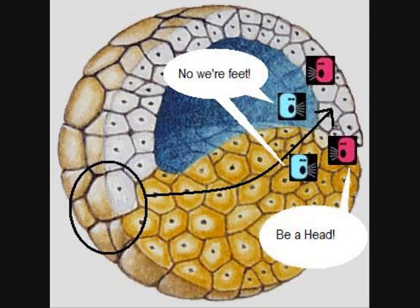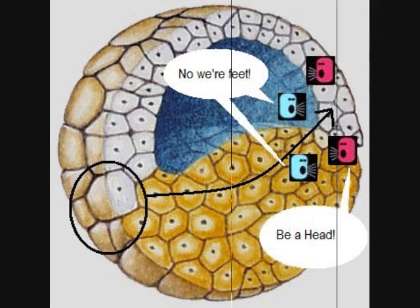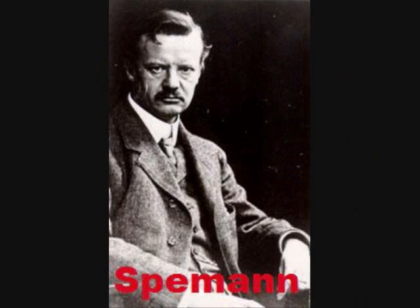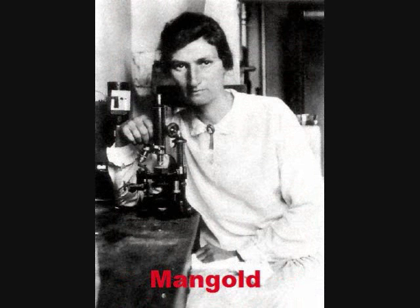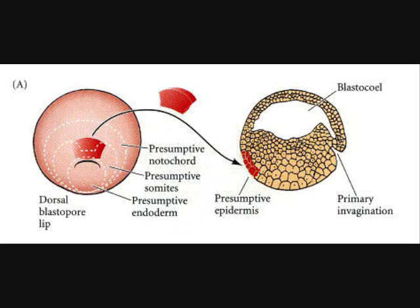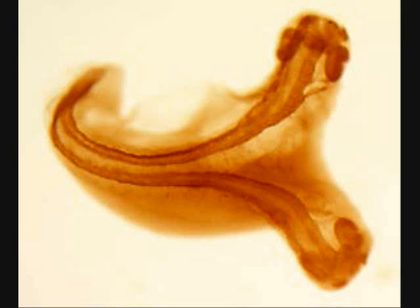A good, real-world example of this stuff are the experiments done by Spemann and Mangold. They thought that this one part of the frog embryo eventually became the spinal cord. So how did they test it? They took that region out of one embryo and moved it to the outside of another embryo. So what happened? The tadpoles they ended up with had two spinal cords, complete with two heads.